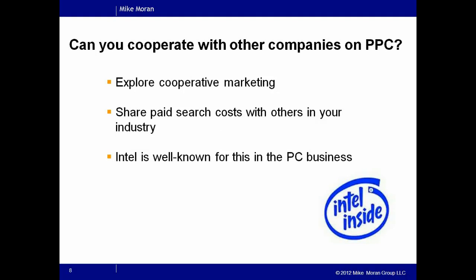Let's look at the kinds of things that can really reduce your costs. I want to start with paid search. The easiest way to reduce costs is not to do any paid search, but for a lot of companies that doesn't make sense because paid search actually brings revenue in. One way to save money on paid search — something I saw working when I was at IBM — is to do cooperative marketing. At IBM, when they were in the PC business, they did a lot of cooperative marketing with Intel. The Intel Inside program is really what's going on: Intel provides money to companies that put their chips in products to help those companies do marketing.